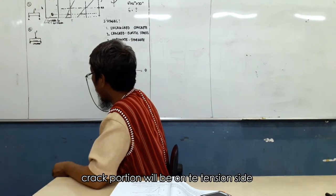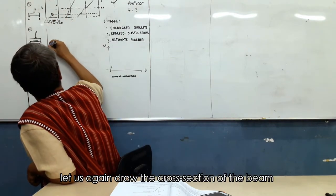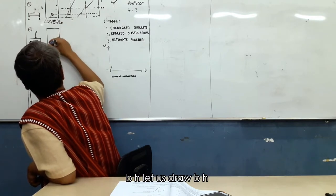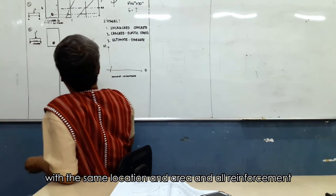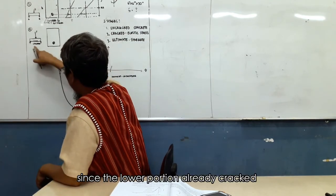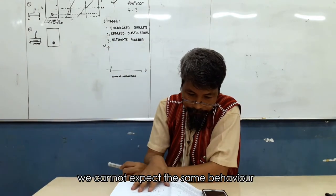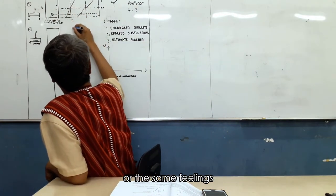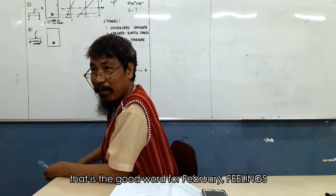Crack portion will be on the tension side. So let us again draw the cross section of the beam. With the same location and area of all reinforcement. Since the normal portion already cracks, we cannot expect the same behavior or the same feeling.